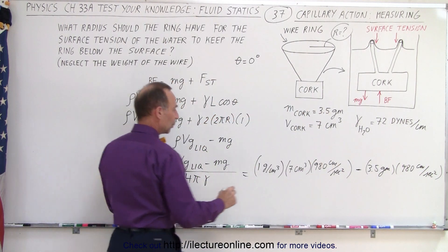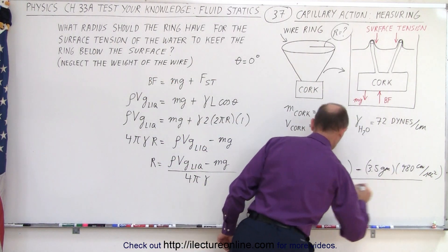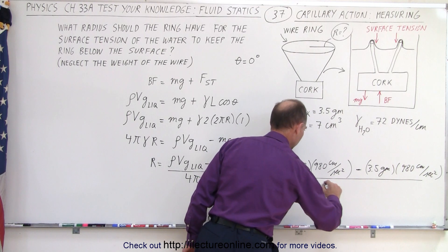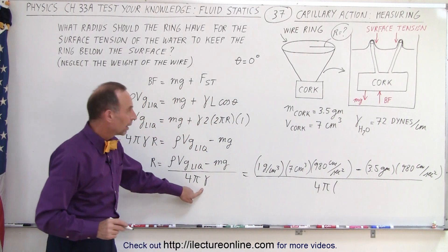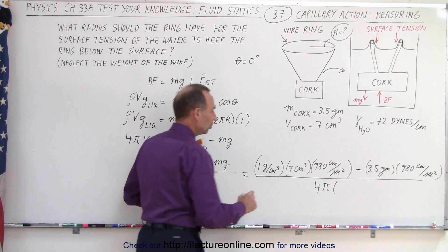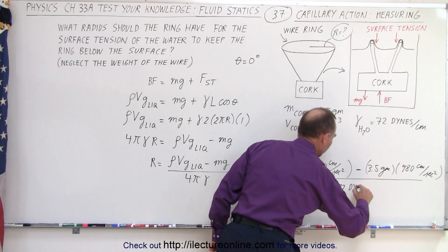Then we divide that by 4π times the surface tension, which is 72 dynes per centimeter.